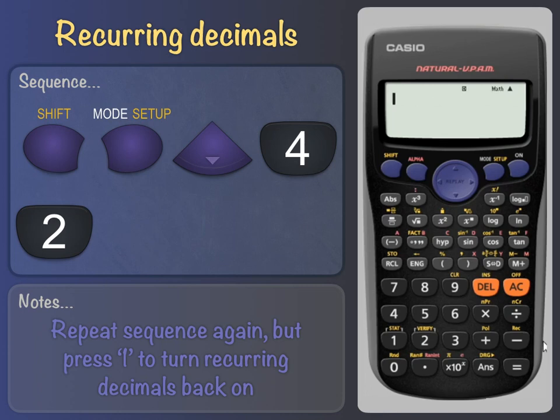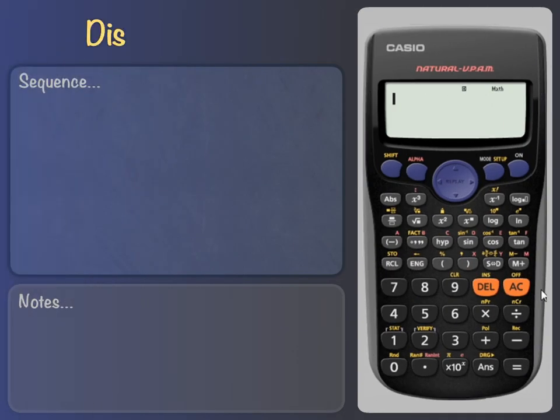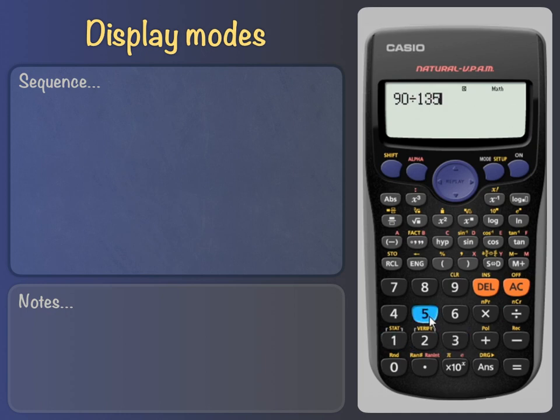Next, we'll look at some of the display modes so you can decide how you want your calculation to appear when entering it, and when the answer's shown. By default, the calculator uses what's called a natural display, where fractions and other expressions are displayed as they're written on paper. So if we input our previous calculation of 90 divided by 135, the answer's first written as a fraction, then after pressing the SD as a recurring decimal, then after pressing the SD again as a non-recurring decimal.